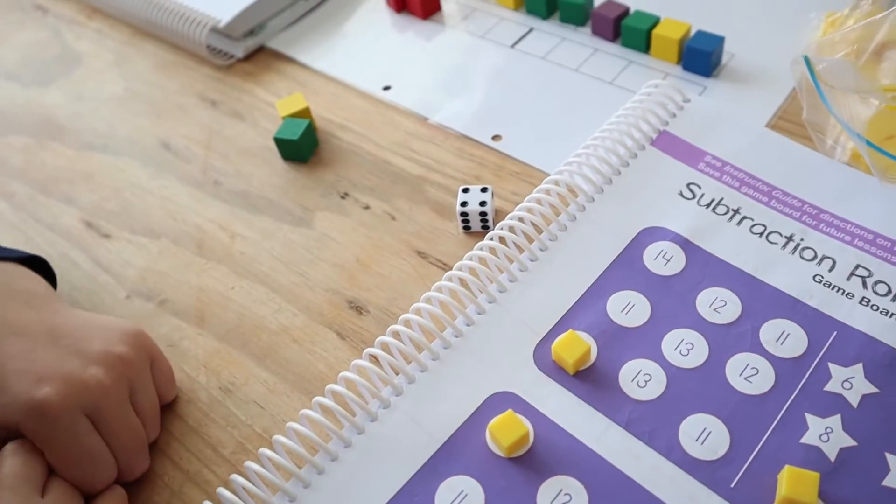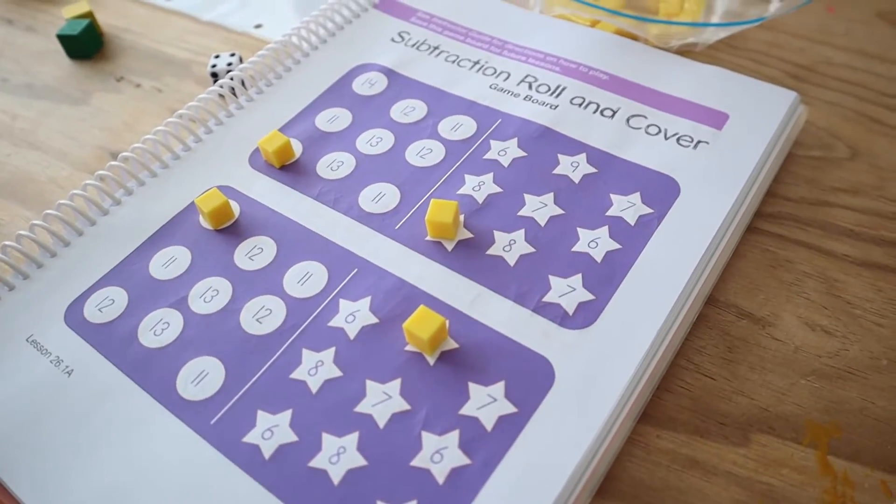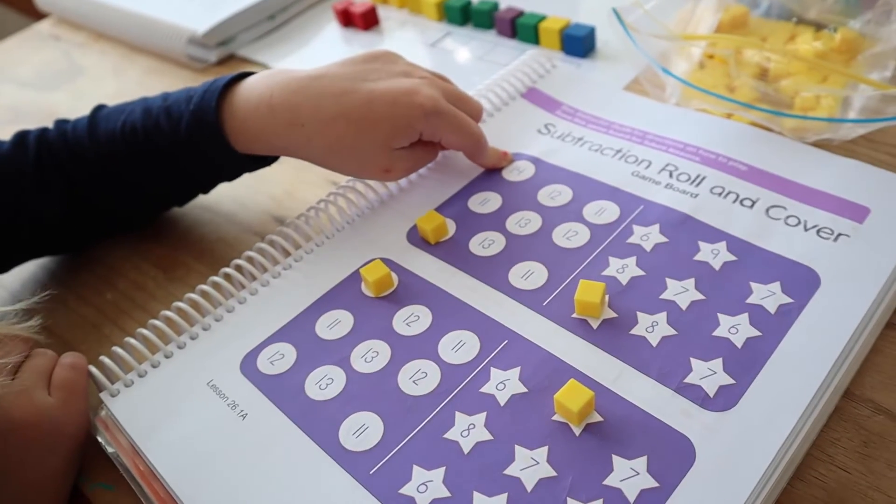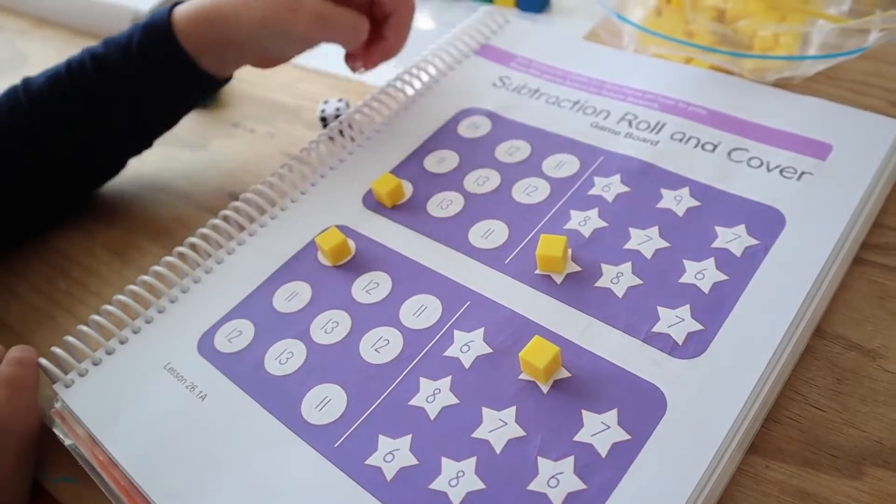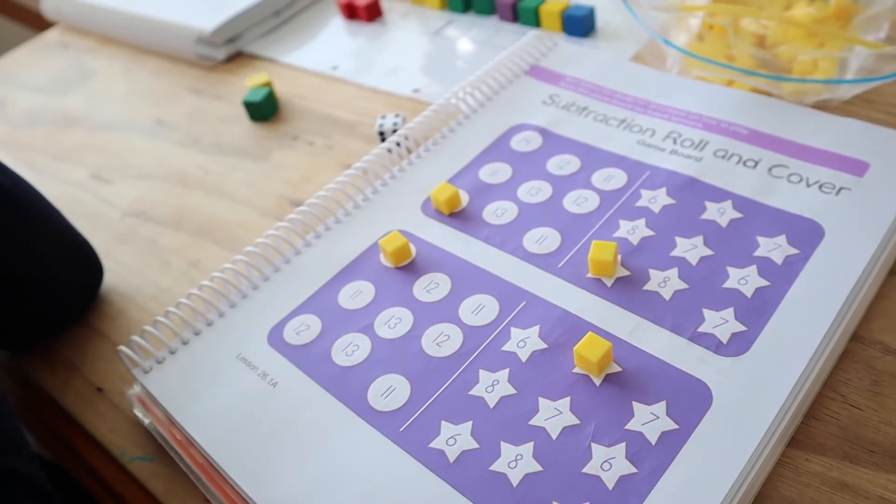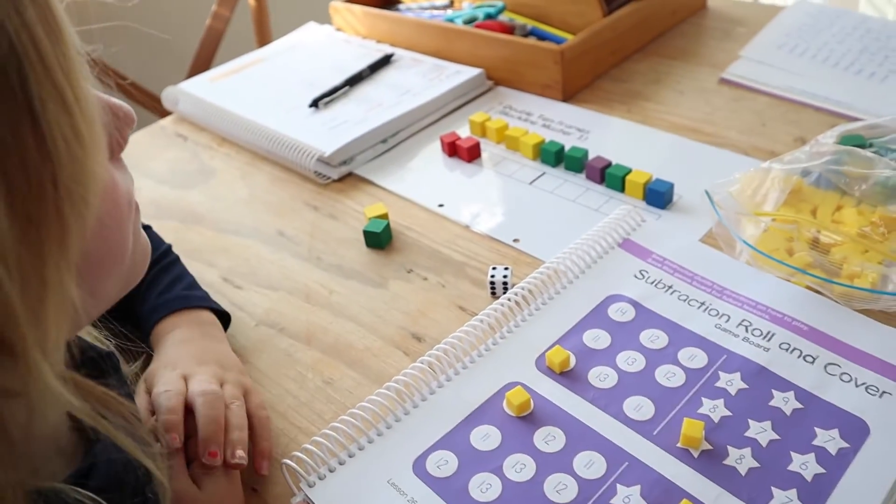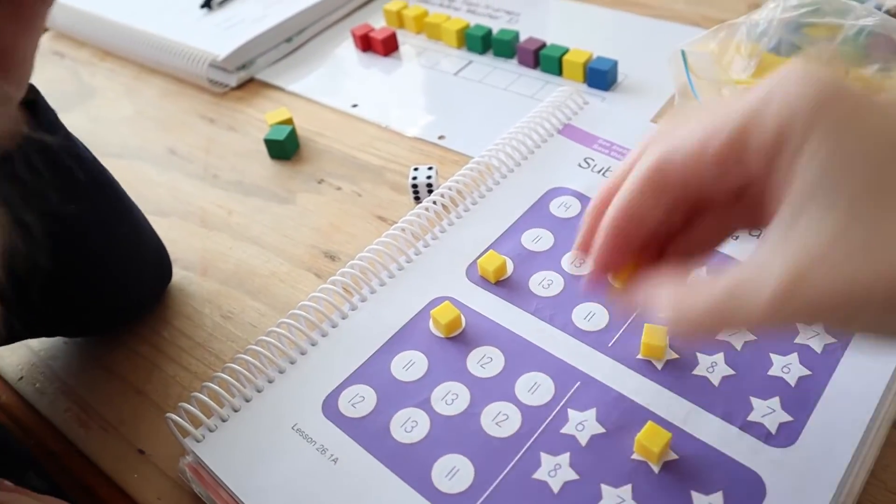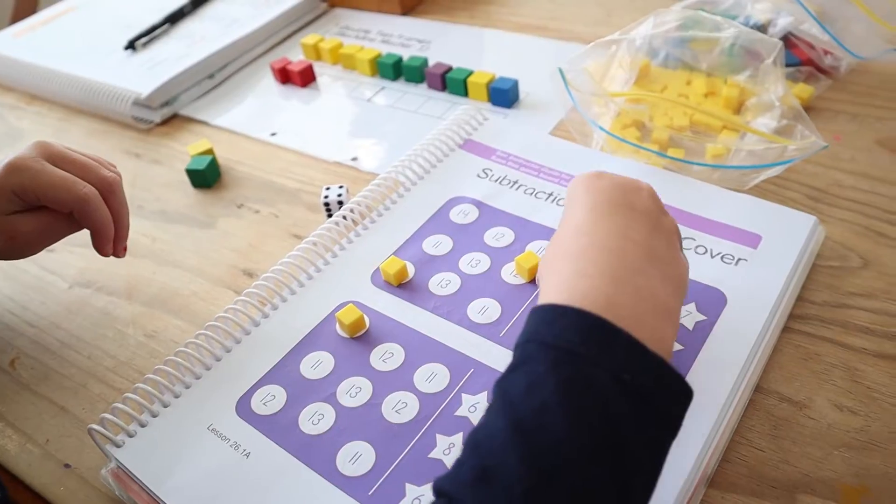Okay. So you get four. So one of these minus four has to equal one of these. What would 14 minus four be? 10, I think? Is there a 10 over here? No. So you can't do that. So 12 minus four equals what? Eight. Well done. So you can put it on a 12 and an 8. Go for it. 12 and 8. Good job.